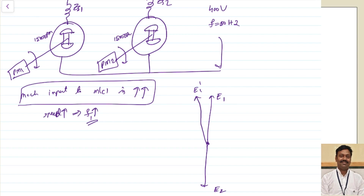Because of this displacement there is a resultant value Esy, which is the vector sum of E1 dash and E2. Because of this, the synchronizing current Isy passes through a pure inductive circuit. So the current will be lagging - Isy lags Esy by 90 degrees.